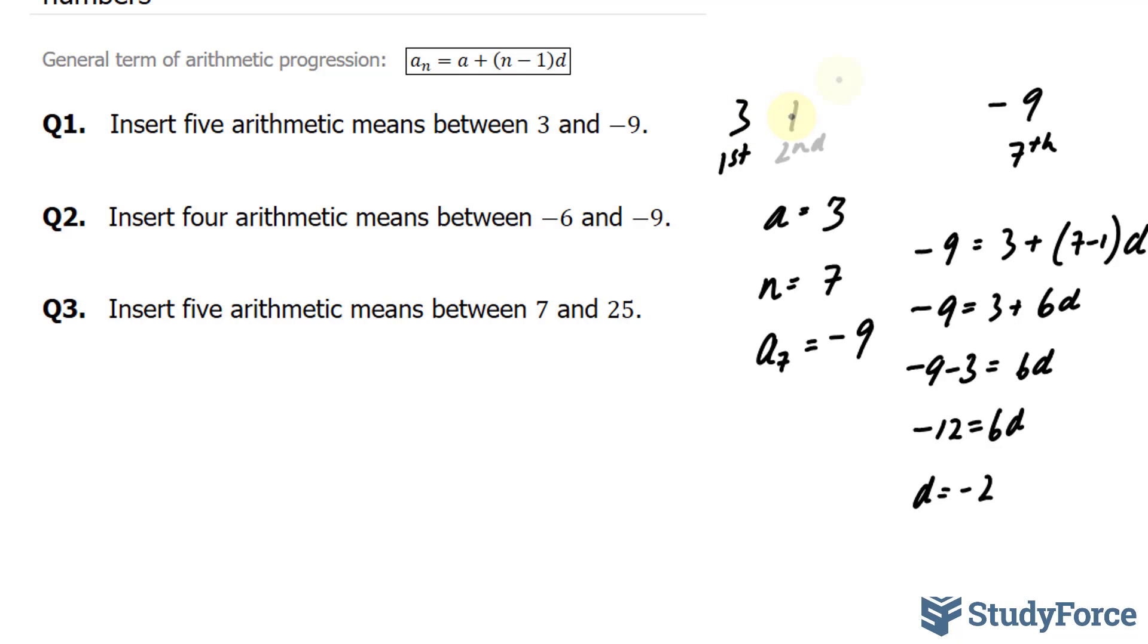So the second term would be 1. The third term would be negative 1, then negative 3, negative 5, and negative 7. These five numbers represent the answer.